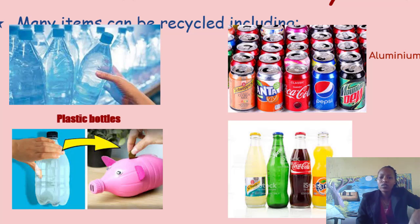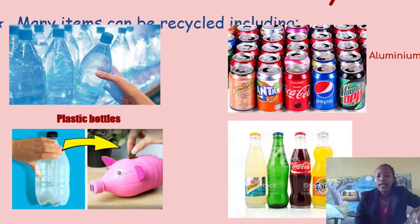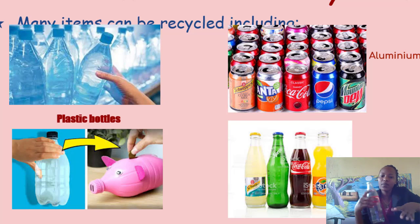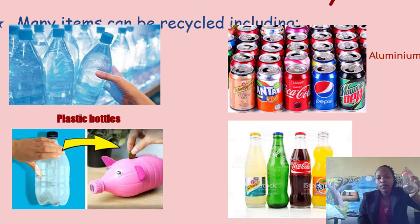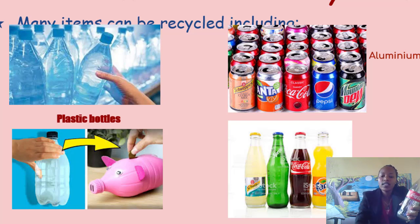We have also the aluminum cans. As you see in the picture, they are made of aluminum. They can also be recycled. We have also the glass bottles, like this one of soda. We have Fanta, Coca-Cola, Sprite, and so many. These are made of glass. They are also recycled.